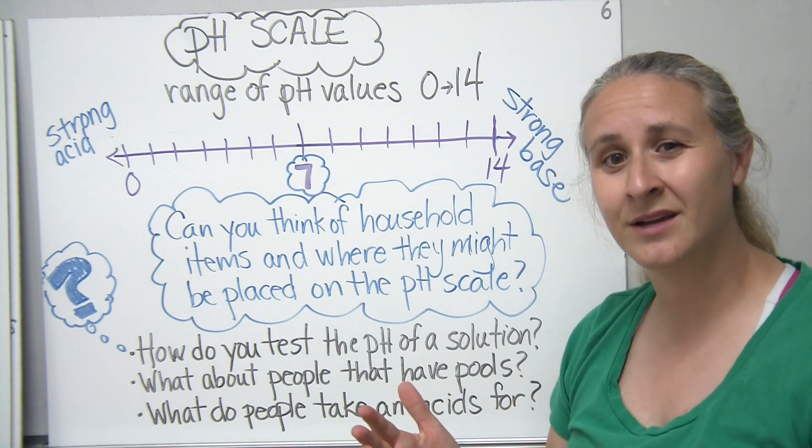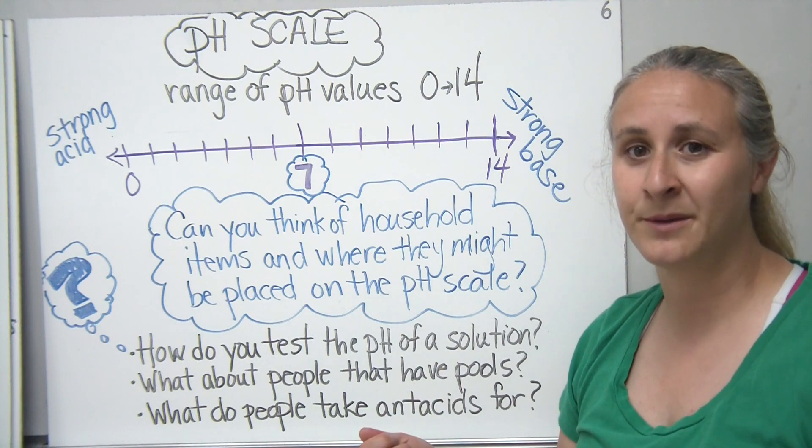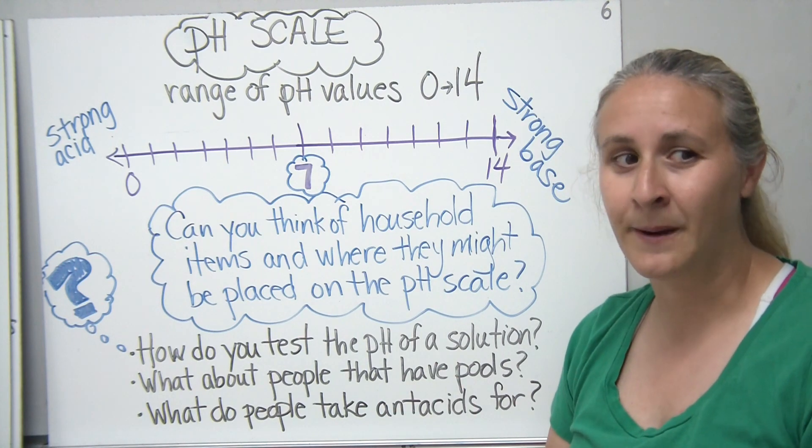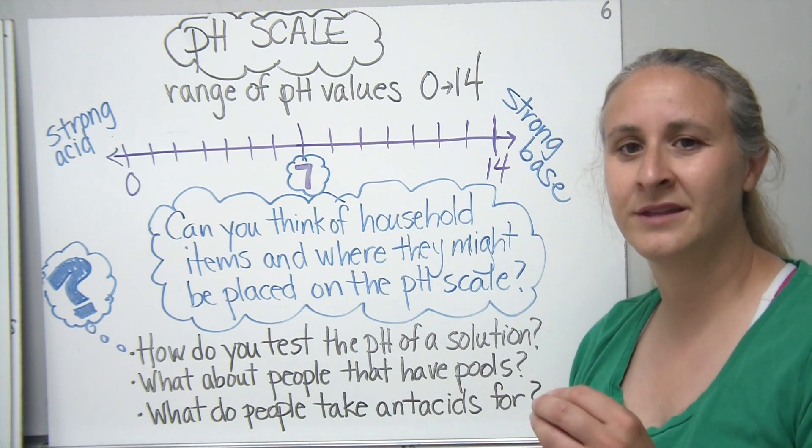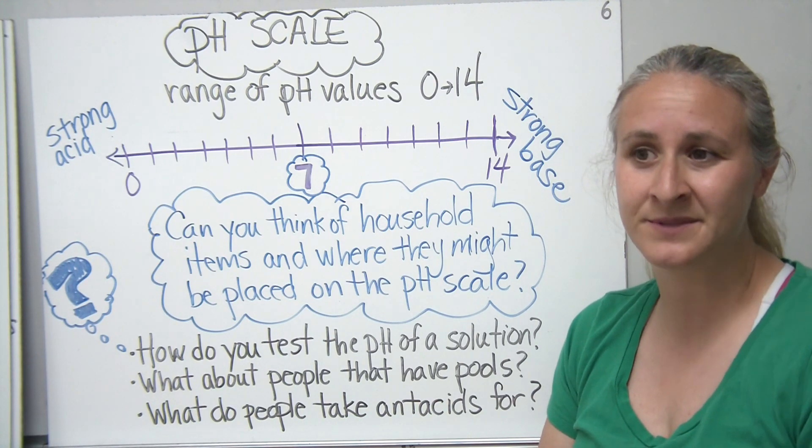In our class, we're going to be using something called litmus paper. And litmus paper typically comes in two colors, red litmus paper and blue litmus paper. We're going to do a lab probably this week that has red litmus paper and blue litmus paper in order to test the pH of an unknown substance.